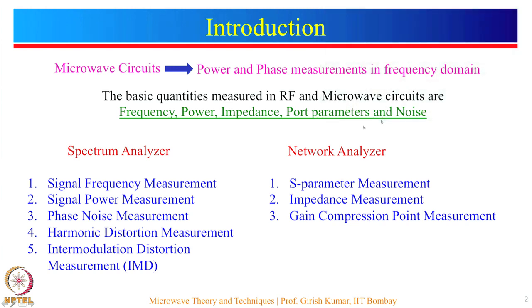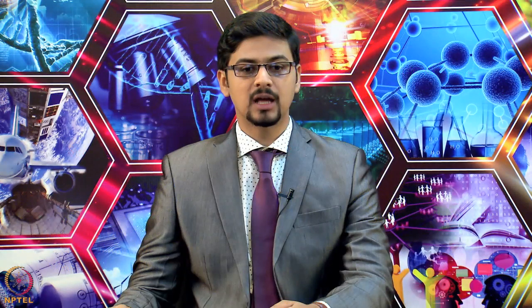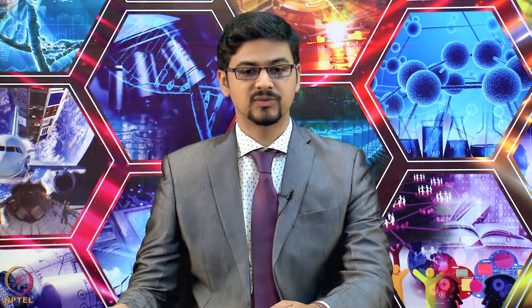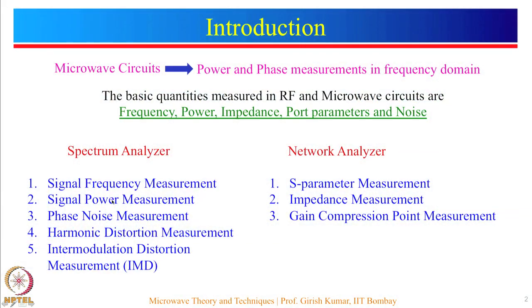These measurements are primarily done using two main instruments: the spectrum analyzer and the network analyzer. The spectrum analyzer is capable of doing signal frequency as well as power measurements fundamentally. It can also measure the phase noise of a signal, and is also used to measure harmonic distortion as well as intermodulation distortion.